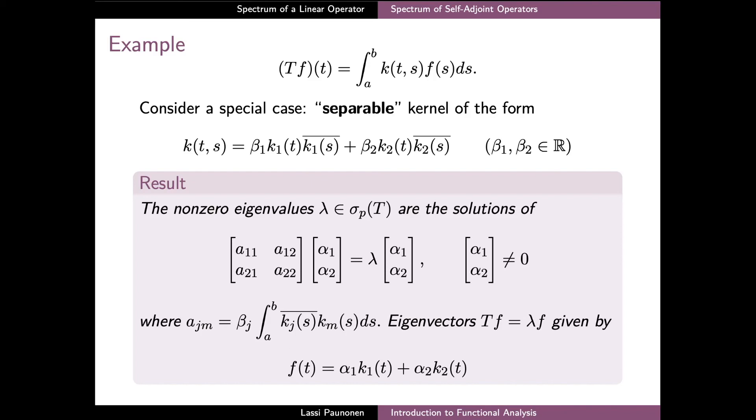Under our assumptions, the two-dimensional eigenvalue problem has only non-zero eigenvalues and a full number of linearly independent eigenvectors.